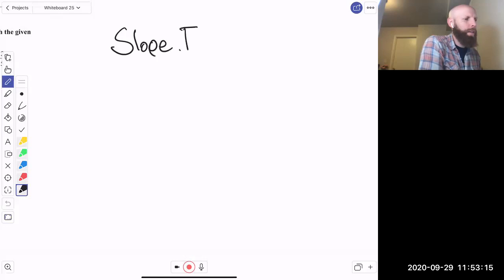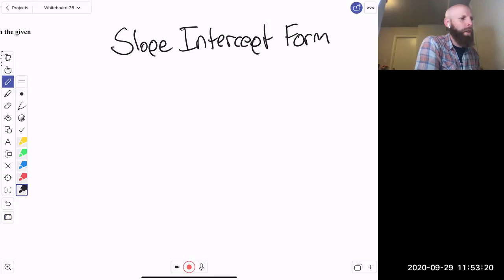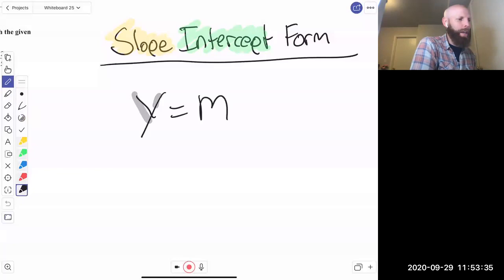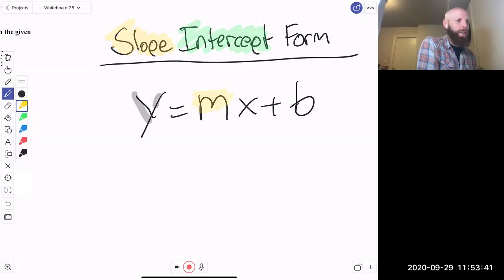Remember that slope-intercept form has a nice ring to it. It's going to have both the slope and the intercept very much present in the actual equation. We're going to go y equals mx plus b. And again, what we'll be showing is the m, which is the slope, and the b, which is the intercept. Slope-intercept form.